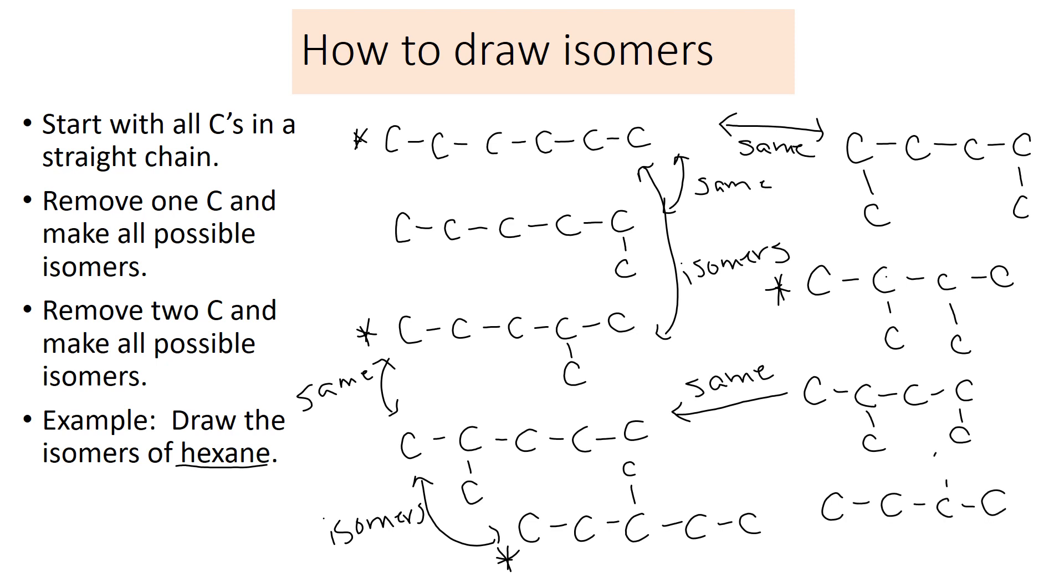The only other thing I can do is make my four and put them both off of this carbon, or I could have put them off that carbon. It would have ended up the same molecule, but this is our last possible isomer. That's the idea. You just draw them all in a line, then you remove one from the end and see where you can put it. You continue until you've drawn all the isomers.